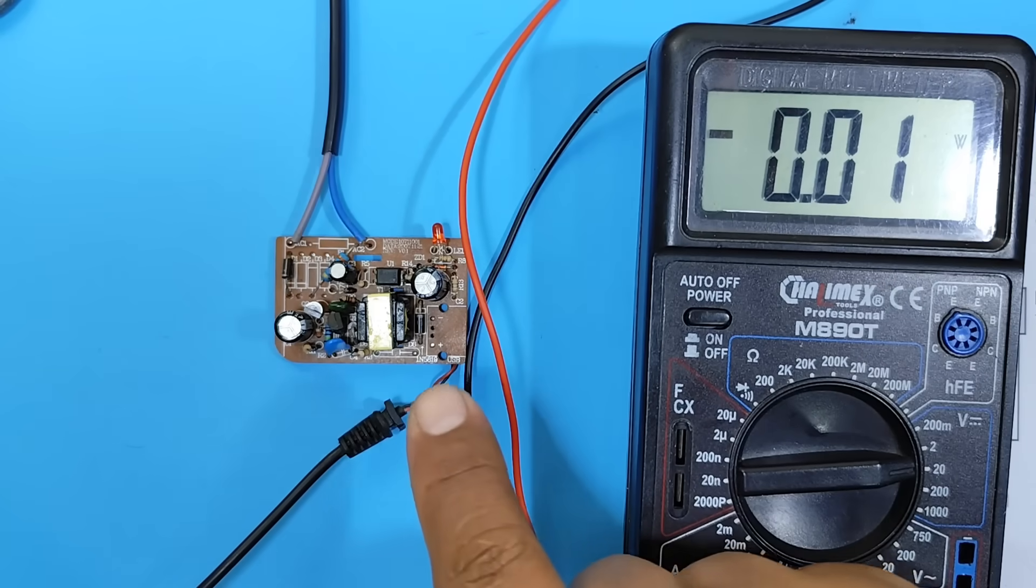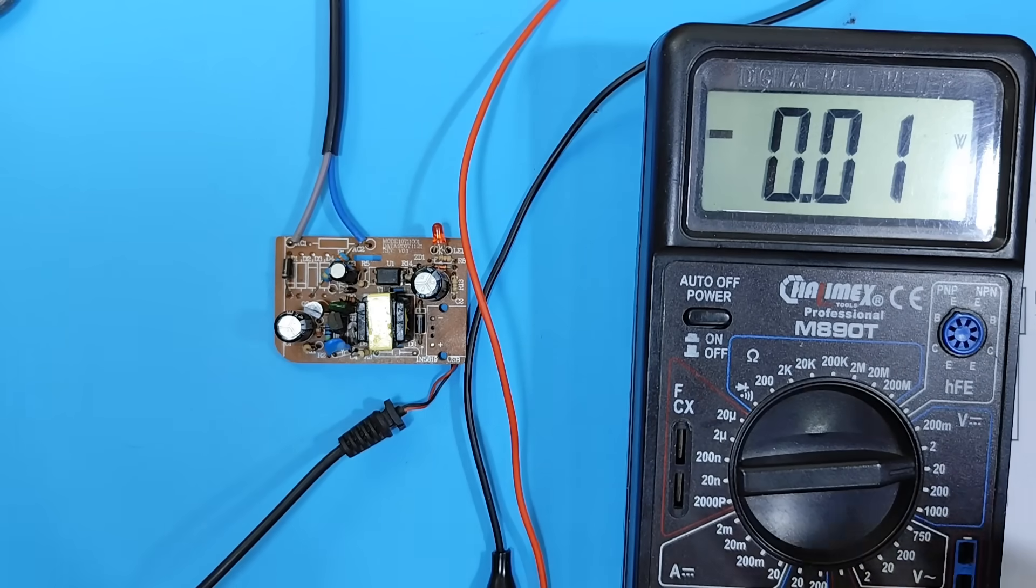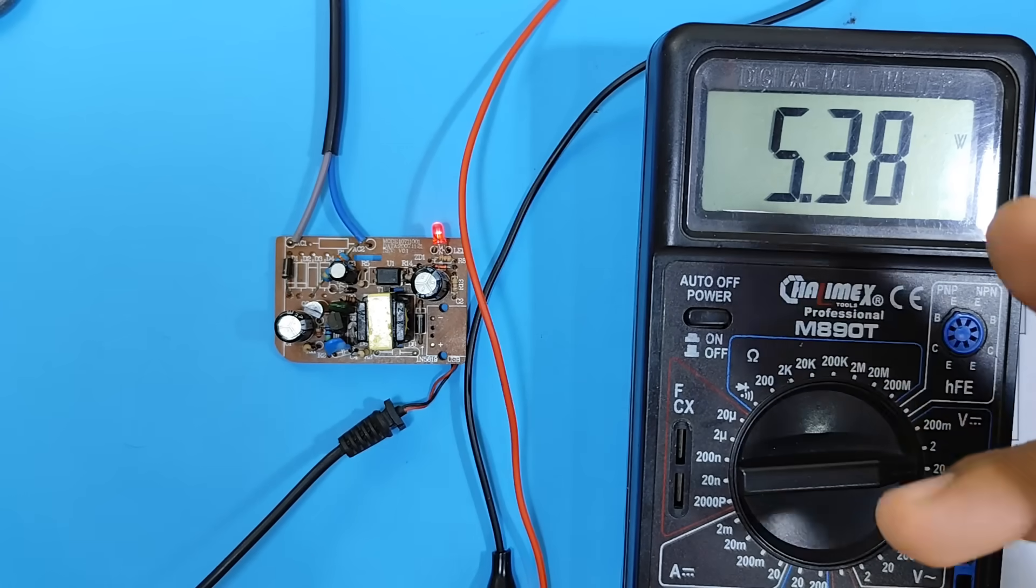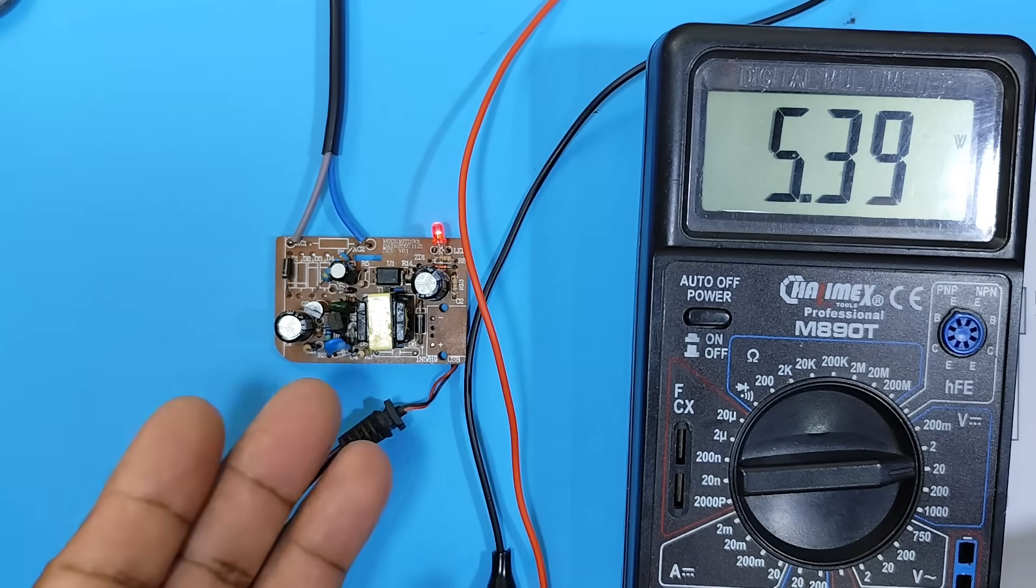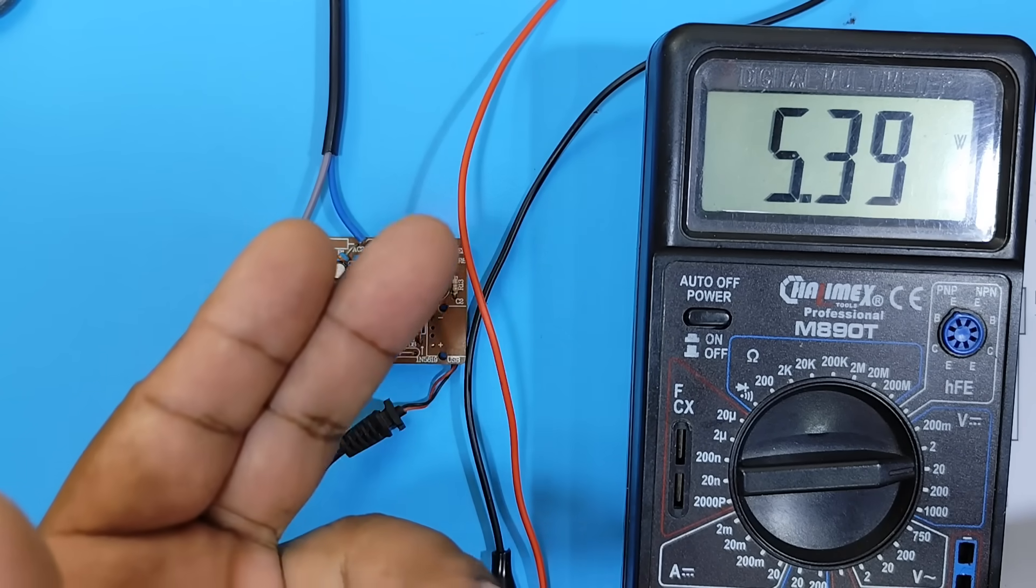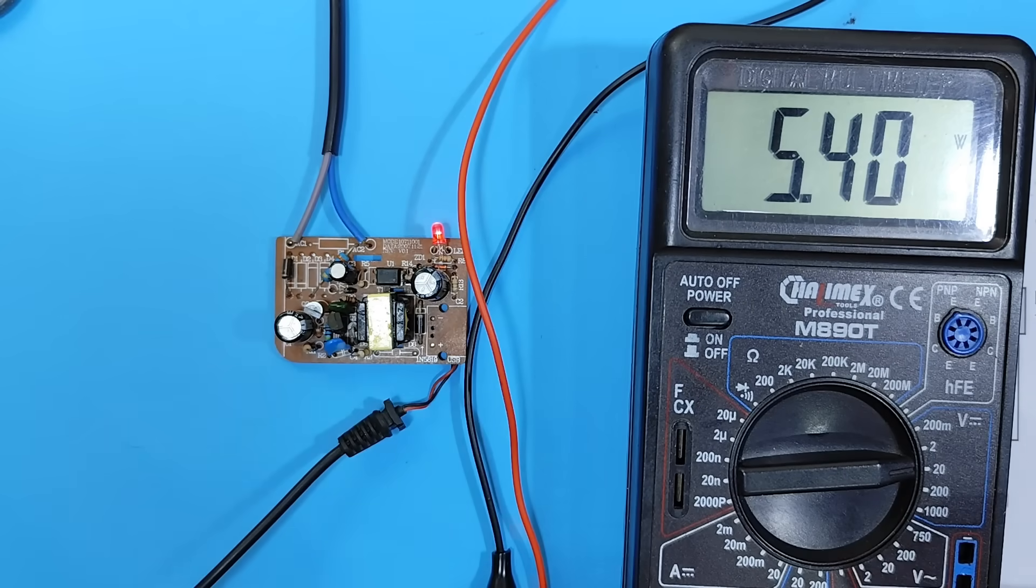Okay. First, let's confirm the output voltage of this cell phone charger, which should be approximately 5 volts. There we have 5.4 volts. So, we're going to replace the Zener diode in this cell phone charger with a 10 volt one, and we're going to see the voltage it delivers when we make that change.